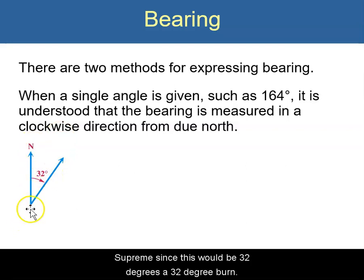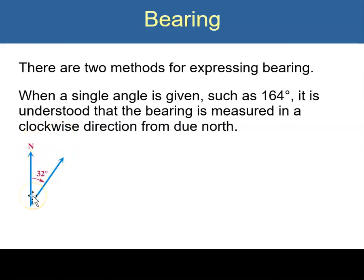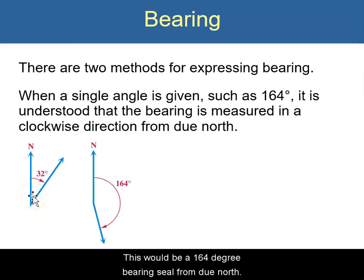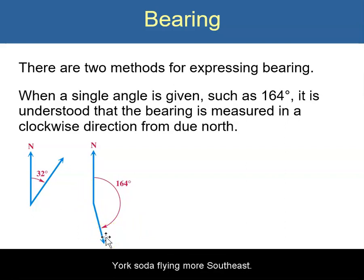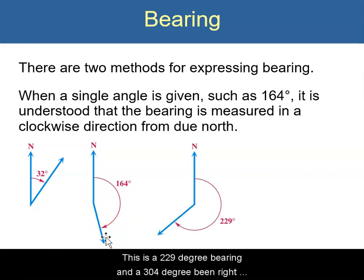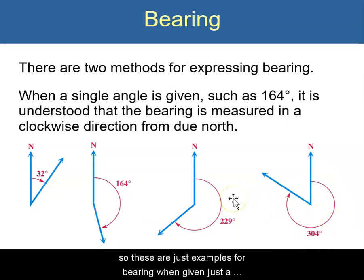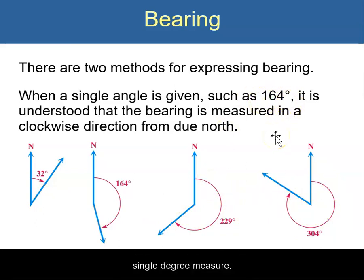So for instance, this would be a 32-degree bearing. This would be a 164-degree bearing — so from due north, if you are flying 164 degrees relative to due north, you're flying more southeast. This is a 229-degree bearing and a 304-degree bearing. These are just examples for bearing when given just a single degree measure.